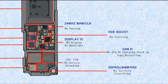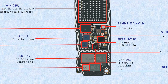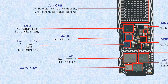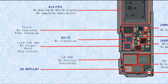This one is 2G PA, DLBM BPA — this is also a power amplifier for 2G or low band and medium band. If broken, it causes no service or searching. On the other side, this one is 2G WiFi LAT — LAT means low antenna — so this is the low antenna of 2G WiFi. If broken, it causes no 2G WiFi.